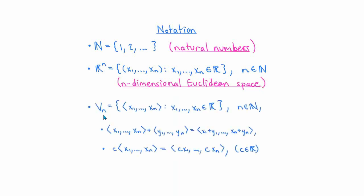If I write v sub n, I also mean the set of ordered n-tuples x1 to xn, but here I'm thinking of these n-tuples as vectors in Euclidean space. So they come along with a natural notion of addition and scalar multiplication. The difference between rn and vn is really subtle, and a lot of times we go back and forth between thinking of points in rn and vectors in vn, or vice versa. If and when it's necessary to emphasize the additional vector structure in vn, we'll use triangular brackets instead of parentheses.